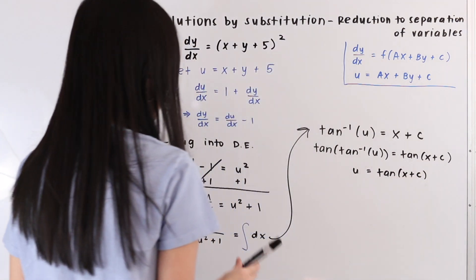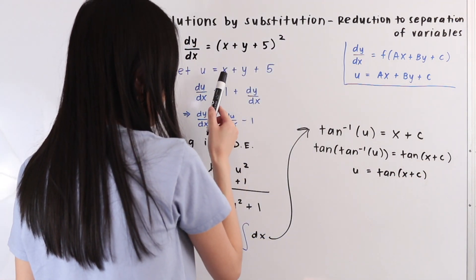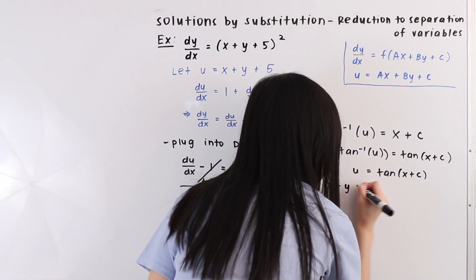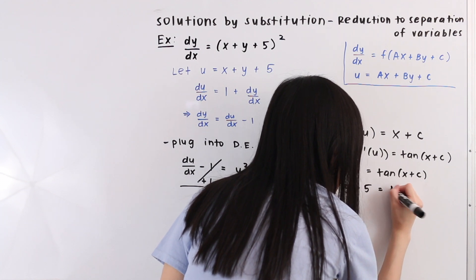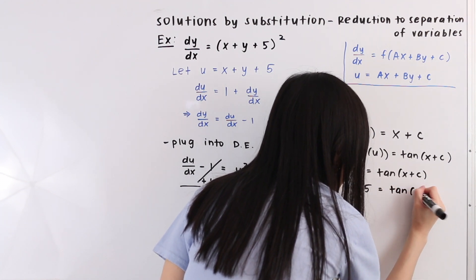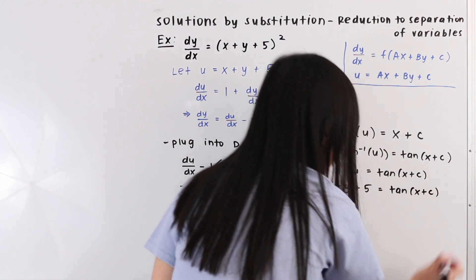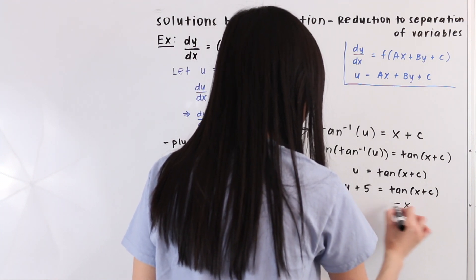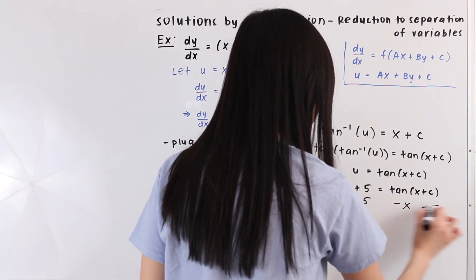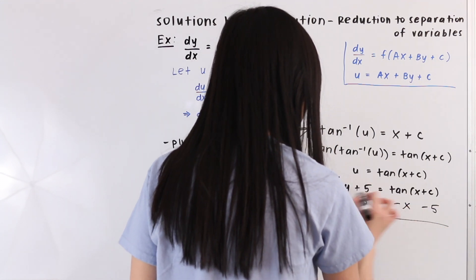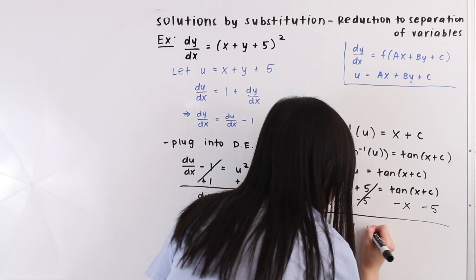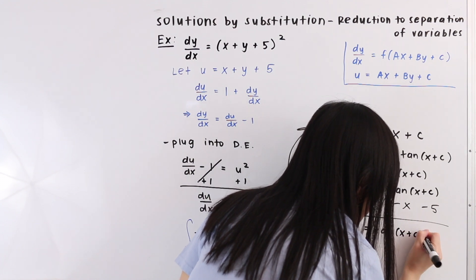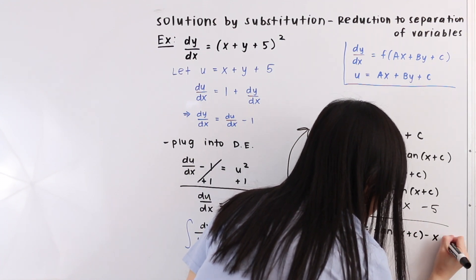Now let's re-substitute for u. Since u is equal to x plus y plus 5, we have x plus y plus 5 is equal to the tangent of x plus c. Now let's solve for y by subtracting x and 5 from both sides. These cancel out and we are left with y is equal to the tangent of x plus c minus x minus 5.